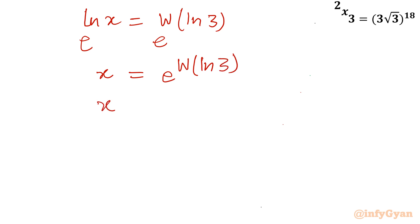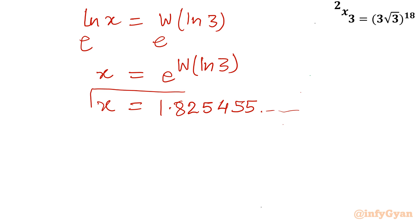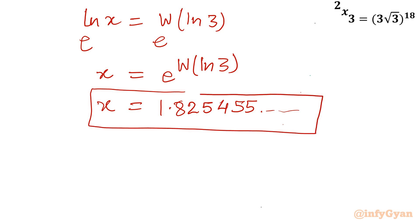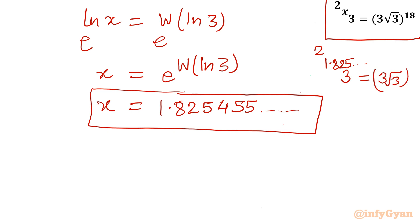If you check this value using Wolfram Alpha, you get approximately x ≈ 1.825455. This is an approximate value. To verify, you can compute 3 superpower 1.8254... superpower 2 and it will match (3√3)^18^18. I hope you liked this video — thank you for watching, don't forget to like, share, and subscribe. Bye bye until the next video.